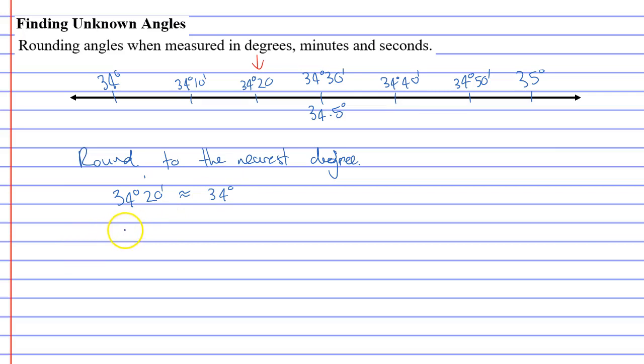And then you've got other ones such as 34 degrees 40 minutes and 40 minutes is closer to 35 degrees. Remembering that 34 degrees 30 minutes is exactly halfway. This is the mark where you always round up. Just like 34.5 degrees which also rounds to 35 degrees.